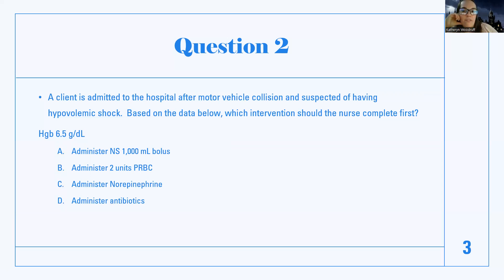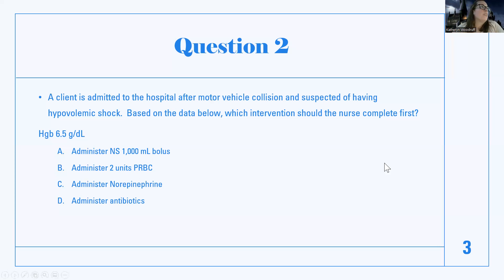Answer C: administer norepinephrine. They may need it — blood pressure is probably low — but if there's no fluid in the tank, there's nothing to squeeze. Answer D: administer antibiotics. They'll probably need antibiotics at some point and maybe surgery, but that's not what I need to do first. Right now this patient is bleeding, and the hemoglobin value in the question is cueing me: they're bleeding. So the best thing to help a hypovolemic shock patient who is actively bleeding is to replace what they're missing. B — two units PRBCs — is the best answer. If they weren't bleeding, say from too many diuretics, then replacing fluid would be appropriate because that's what they'd be missing.